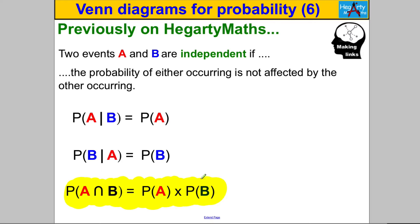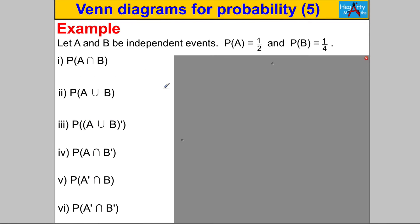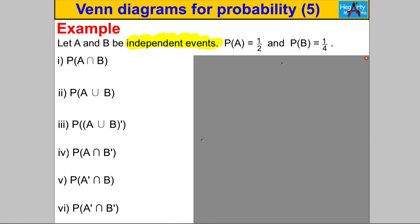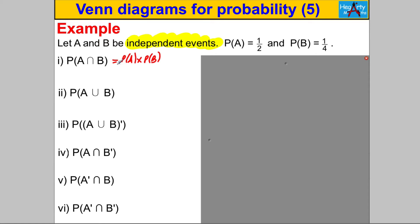With all that in our back pocket, let's try some questions. Here's the first one — pause the video and have a go. We're told that A and B are independent events, given the probability of A and the probability of B, and asked for the probability of A and B. The rule we should know is P(A∩B) = P(A) × P(B), so we do one-half multiplied by one-quarter to get one-eighth.